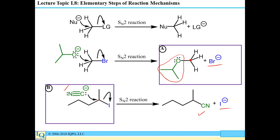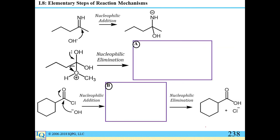One important feature of the SN2 reaction learned later in the course: if the carbon is a chiral center, you get stereo inversion — this is known as the Walden inversion. In Organic Chemistry 2, we will do many reactions that involve nucleophilic additions and nucleophilic eliminations, so it is important to review these particular types of reactions carefully.